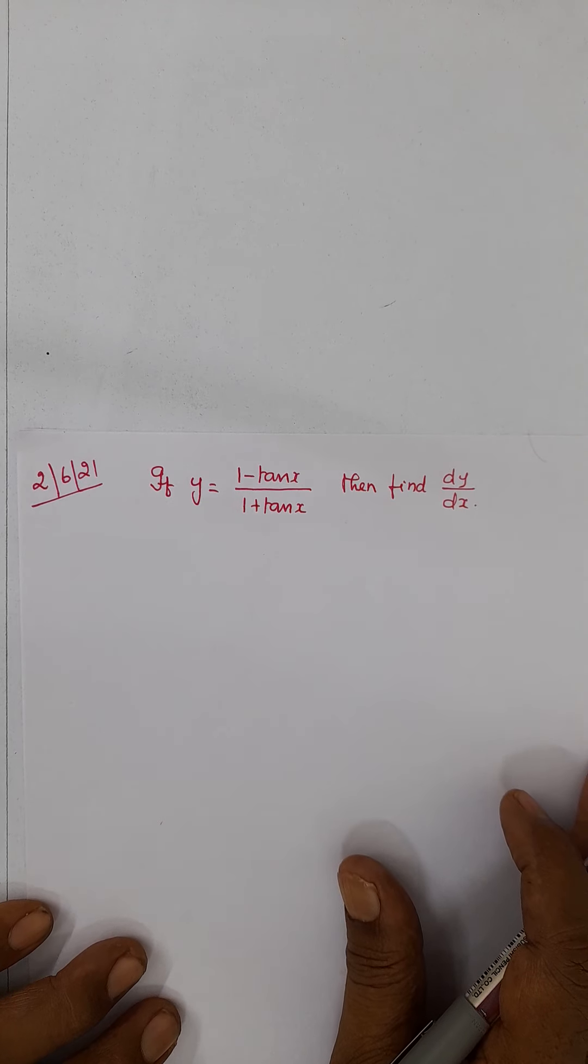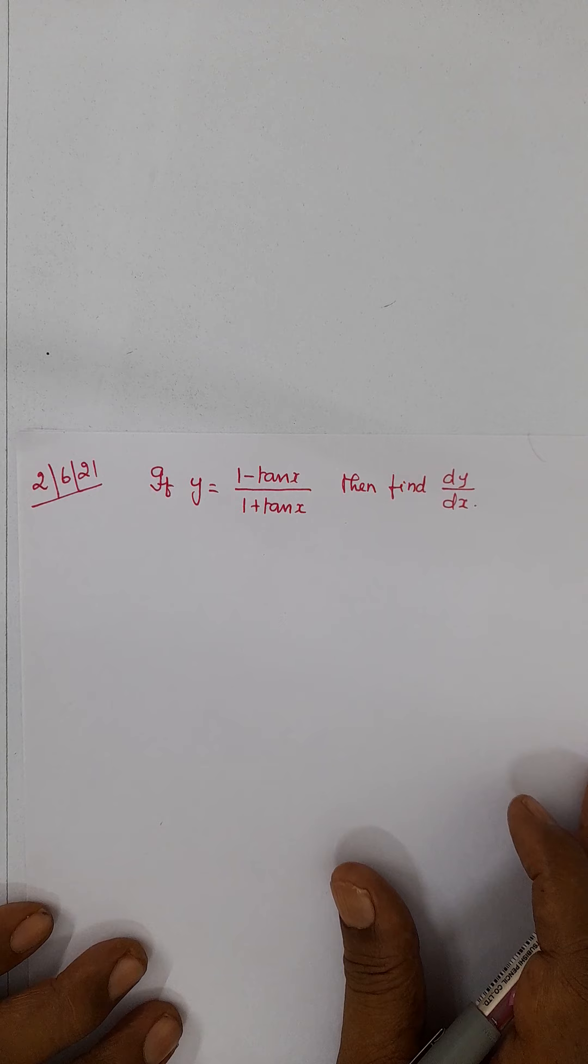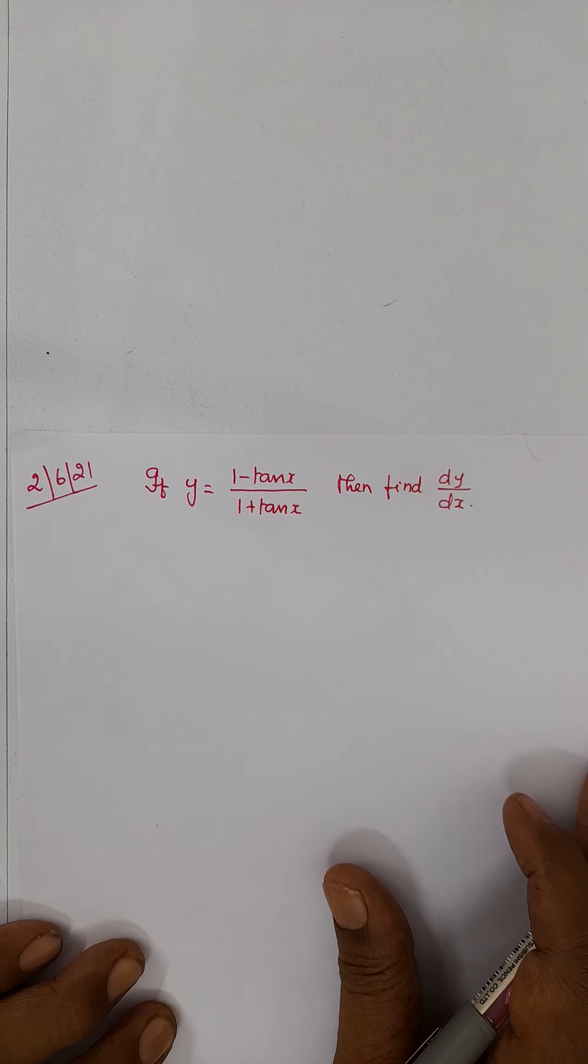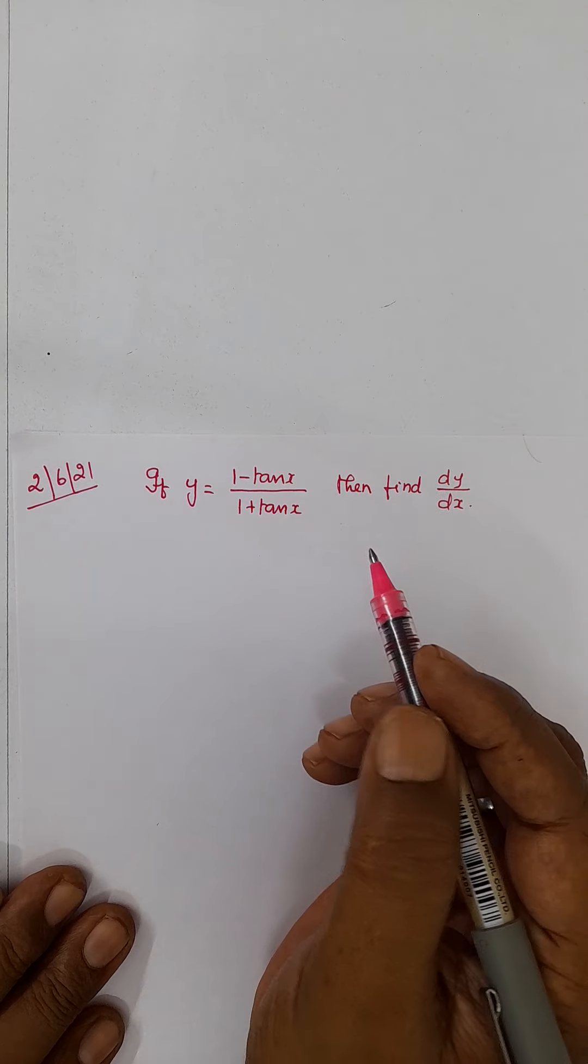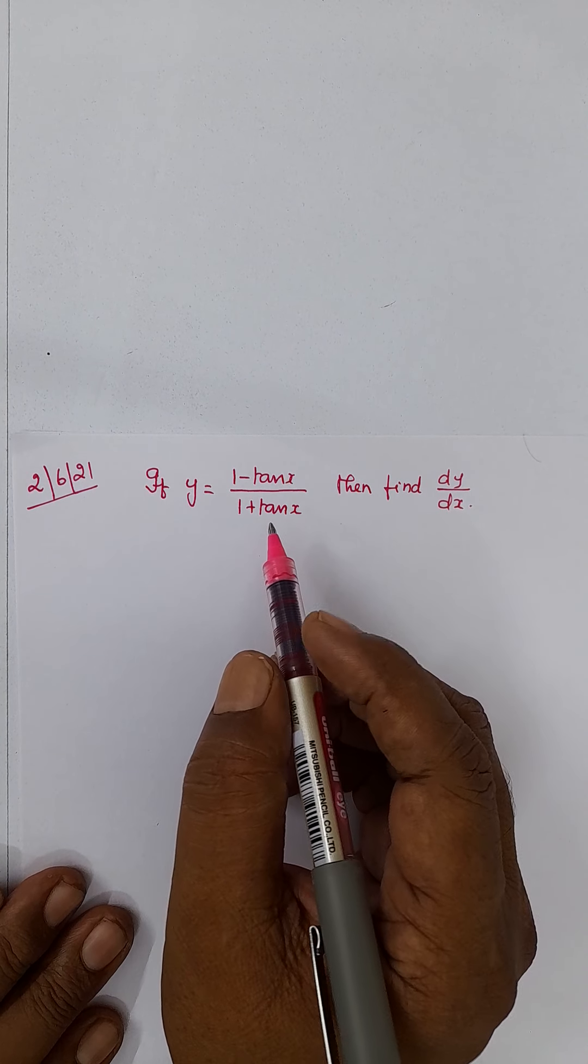If you do this sum by u by v method, it will take minimum 3 minutes. But as I told you in the last session, you are supposed to finish this problem by 1 and half minutes. So, I am going to do some smart work to do this sum.